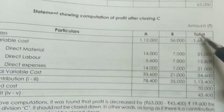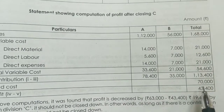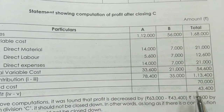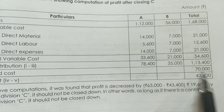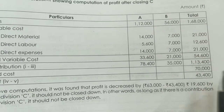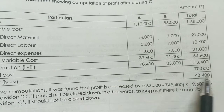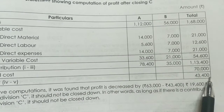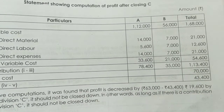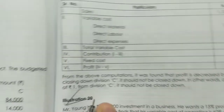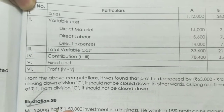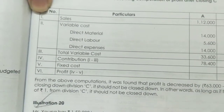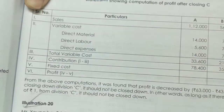If Division C has a fixed cost, that fixed cost remains. From the above computation, it was found that profit is decreased by 63,000 if Division C is closed.